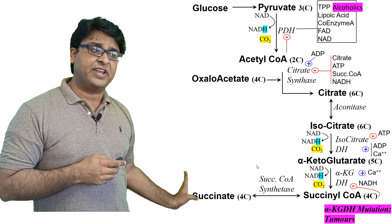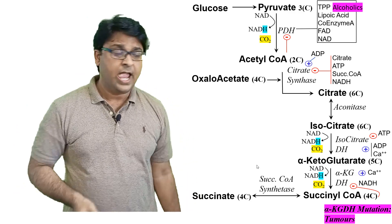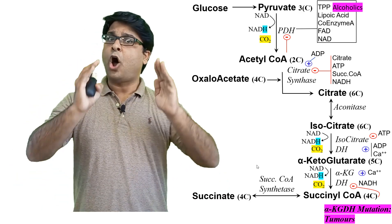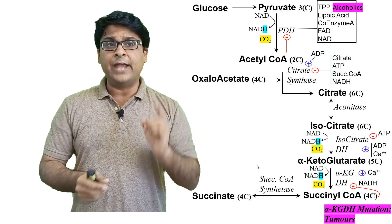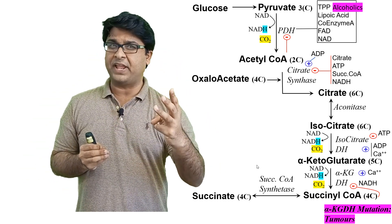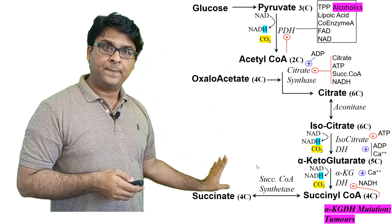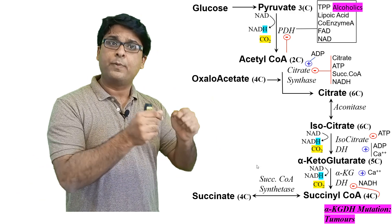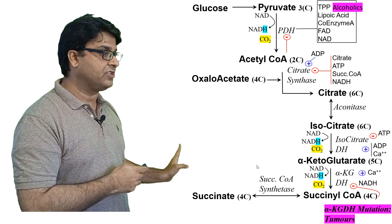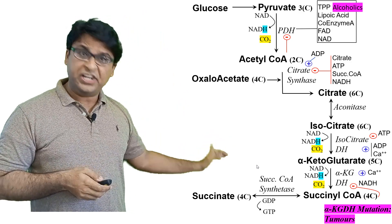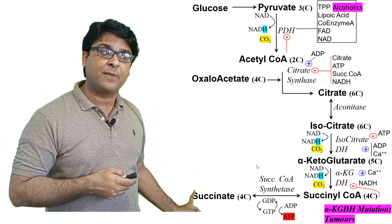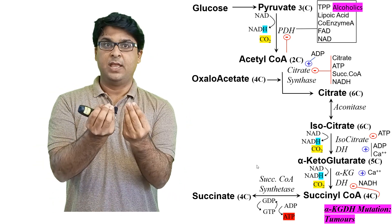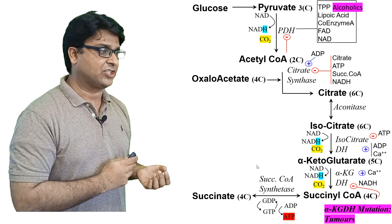Succinyl-CoA is converted into succinate, also a four carbon compound, so no carbon dioxide is released. The enzyme is called succinyl-CoA synthetase. Here an important event occurs: this is the third of three substrate level phosphorylations — two in glycolysis and this third one here. A phosphate group is added to GDP to produce GTP, then ADP steals the phosphate and is converted to ATP, while GTP reverts to GDP. This generates ATP and is called substrate level phosphorylation.